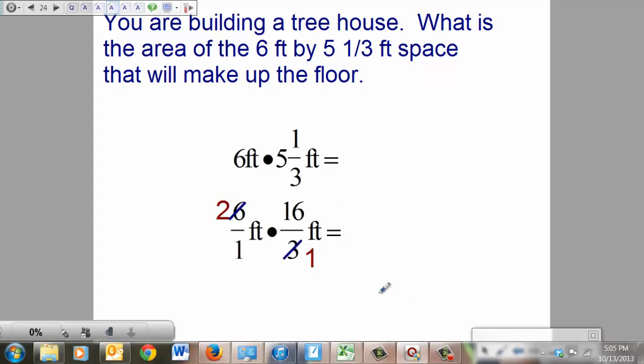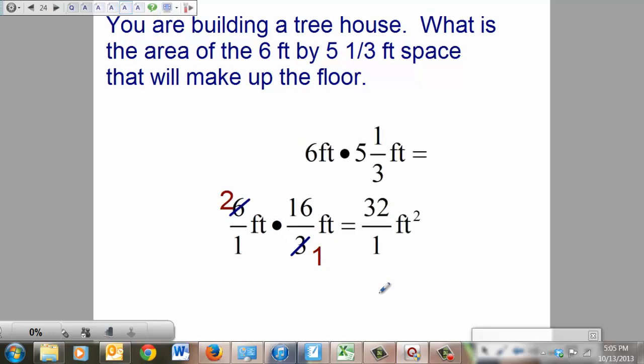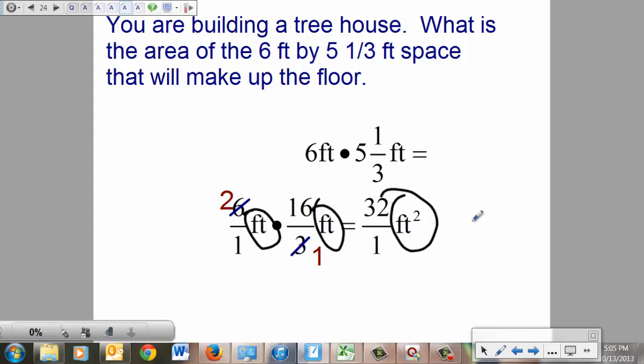From there, we're going to take 2 times 16 is 32. 1 times 1 is 1. But the magical part, feet times feet, is feet squared. Don't lose your units. If you lose your units, you will get an um. Easy math. Circle, you take that 32 over 1, make it just 32 feet squared. Circle your answer.